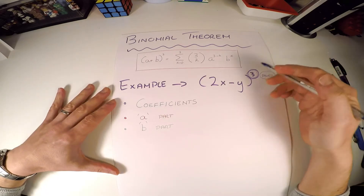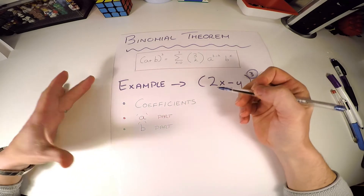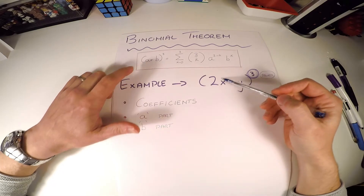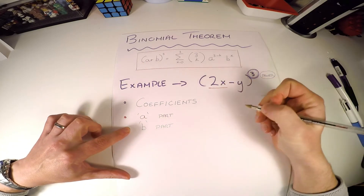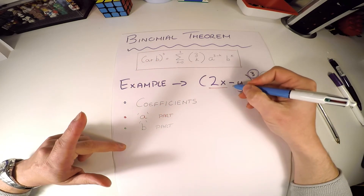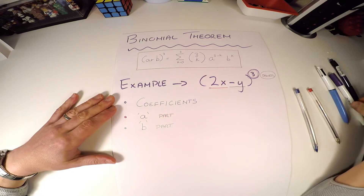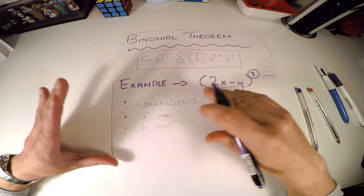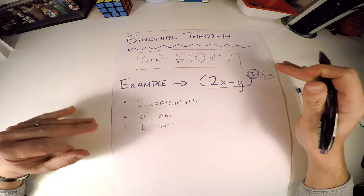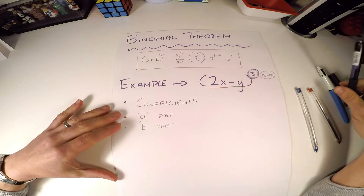Let me show you how I remember it. I have three parts: the coefficient part at the front, the a-part, and the b-part. In my example, the a-part is 2x (the first part of the bracket) and the b-part is minus y — and it's important we include that minus. The power of three controls how many terms we write out. Including zero, that gives us four different terms: powers of three, two, one, and zero.